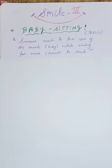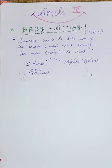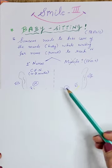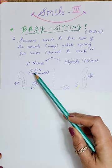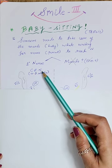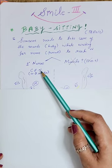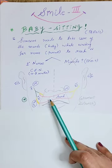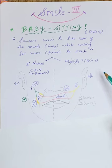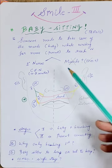In cases of the cross facial nerve graft (CFNG), we do this babysitting procedure because the cross facial nerve graft which comes from the contralateral side, that is from the non-paralyzed side to the paralyzed side, is going to take a period of four to eight months to reach.